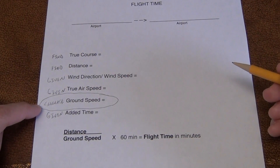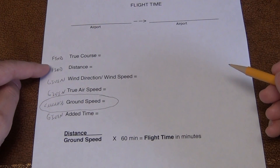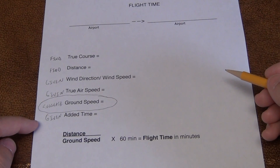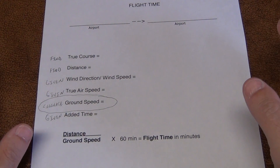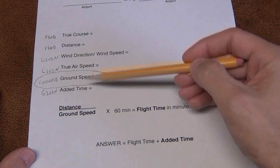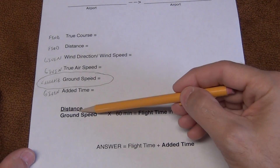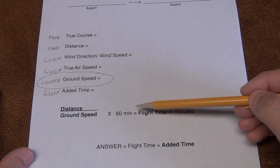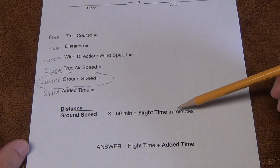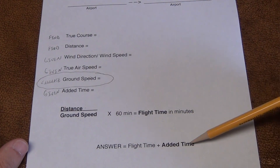The only real calculation you're making is the ground speed, and I'll show you how to do that. So you'll find the true course and distance between the airports, and they'll give you the wind direction, wind speed, and true airspeed. Once you have all that information, you plug it into this very simple formula: distance divided by ground speed, multiplied by 60 minutes — that's just a conversion factor you'll use in every question. That gives you your answer in minutes. If they want you to add on flight time, it would be the answer plus the added time.